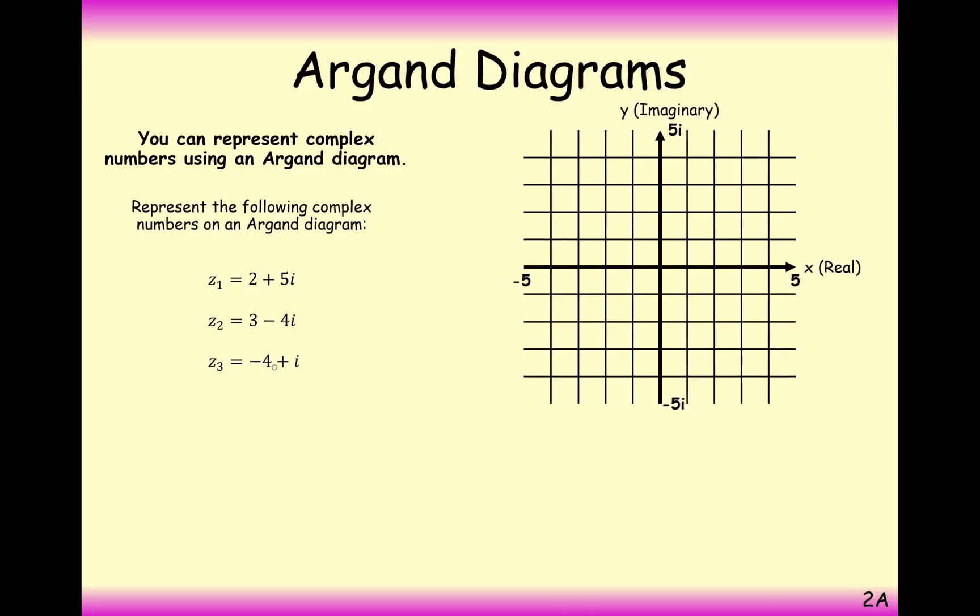We'll have a go at plotting these three complex numbers. So this is how it works. We go from left to right on the real part of the number, the 2, the 3 or the minus 4, and we go up and down for the 5, minus 4, 1 on the imaginary part of the axis. So this is how we effectively represent complex numbers on a number line.